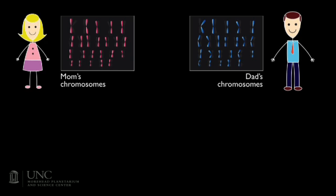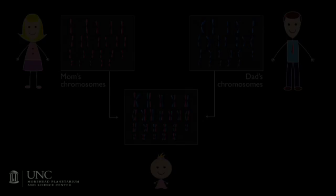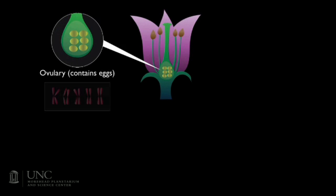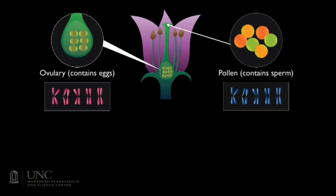So why do we share so many traits with our parents? The reason is that when humans reproduce, the child gets half of his or her chromosomes from the mother, and the other half from the father. Therefore, your genes are just a combination of genes from your mother and father. Plants reproduce this way too — the male and female parents each contribute half a set of chromosomes to the seedling.